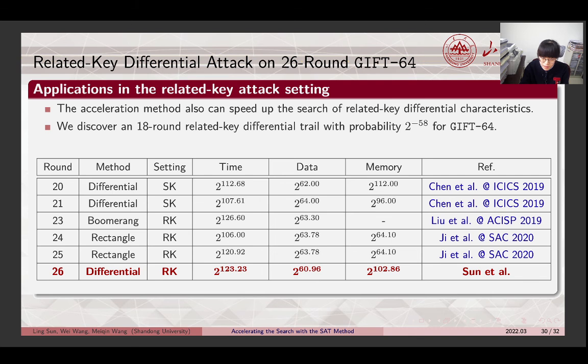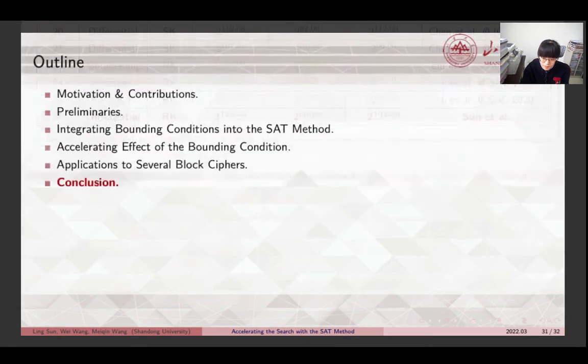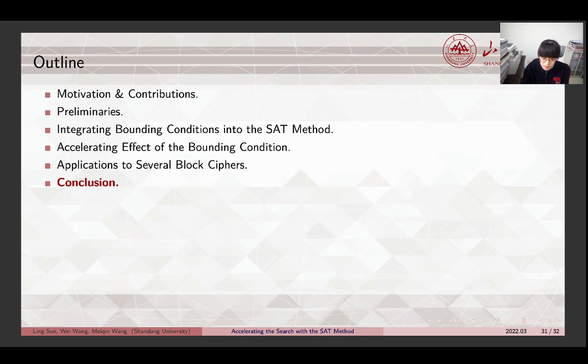Note that the acceleration method also can be utilized to speed up the search of related-key differential characteristics. With this method, for GIFT64, we discover an 18-round related-key differential trail with probability 2 to the minus 58. With the 18-round distinguisher, we launch a related-key differential attack on 26-round GIFT64.